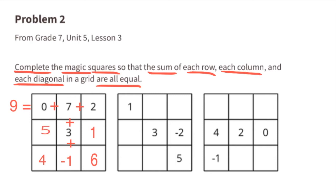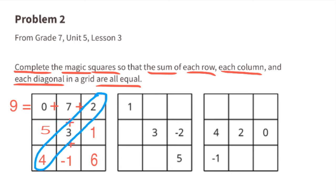For the empty box on the left: 5 plus 3 plus 1 equals 9. Vertically on the left side: 0 plus 5 plus 4 equals 9. Checking more rows and diagonals: 5 plus 3 plus 1 is 9, 4 plus 3 plus 2 is 9, and 0 plus 3 plus 6 is 9.